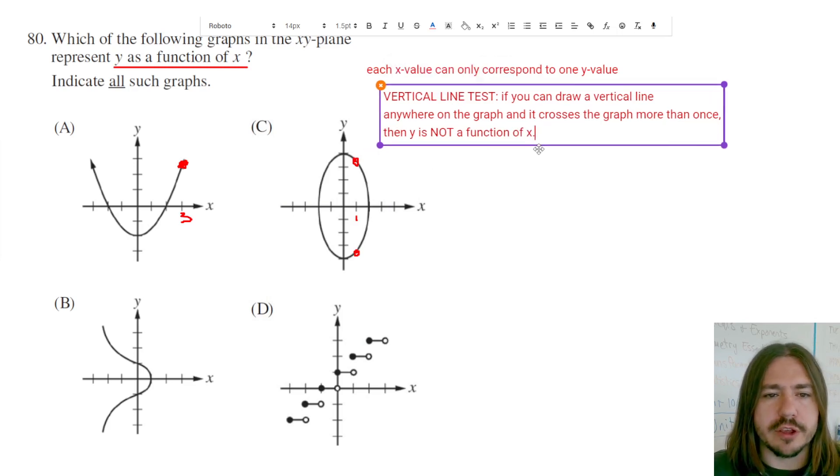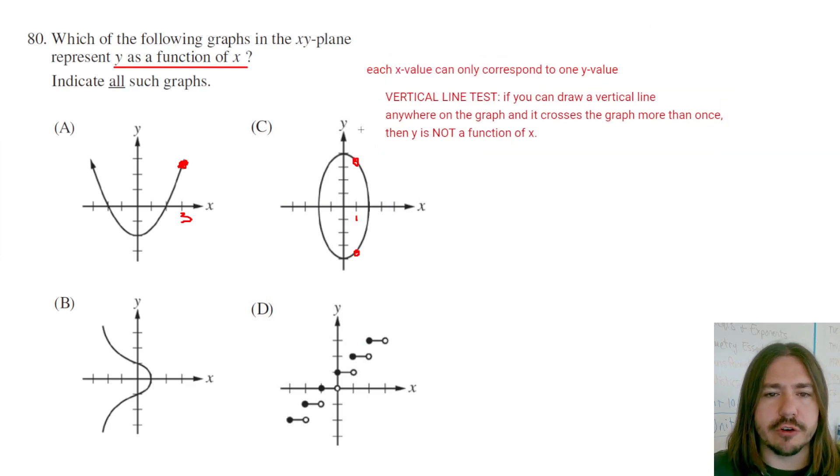So, looking at C again, I can draw a vertical line right here, right? And, in fact, there's lots of places where I could draw a vertical line on this graph where I'm intersecting the graph twice, so I know this is not going to be the right answer. Same thing goes for B. I can draw a vertical line here, and then this is not going to be a function.